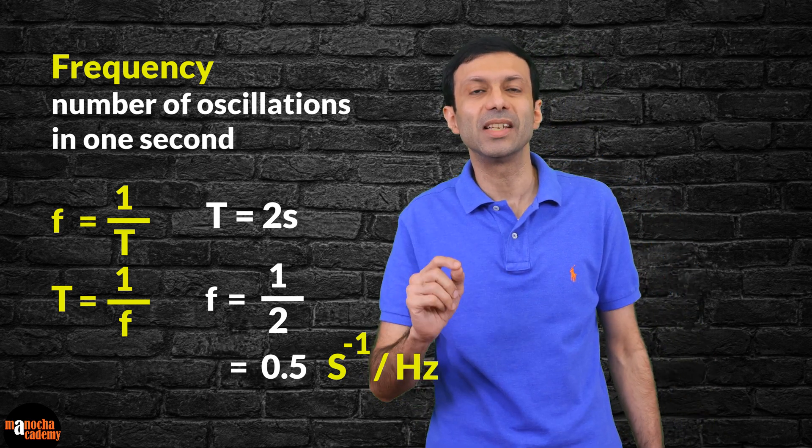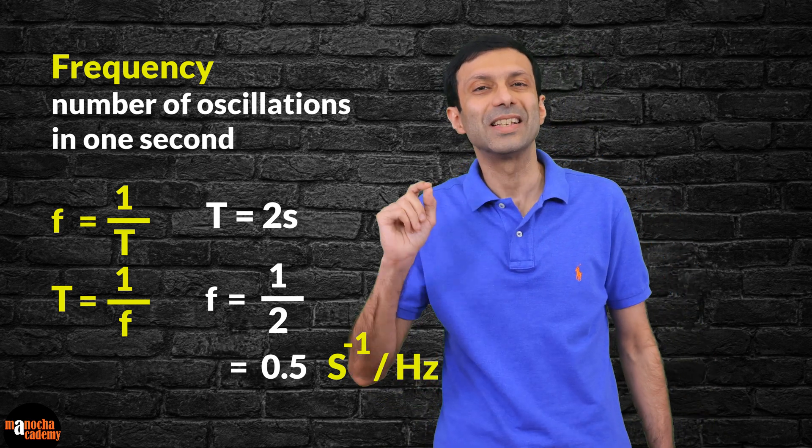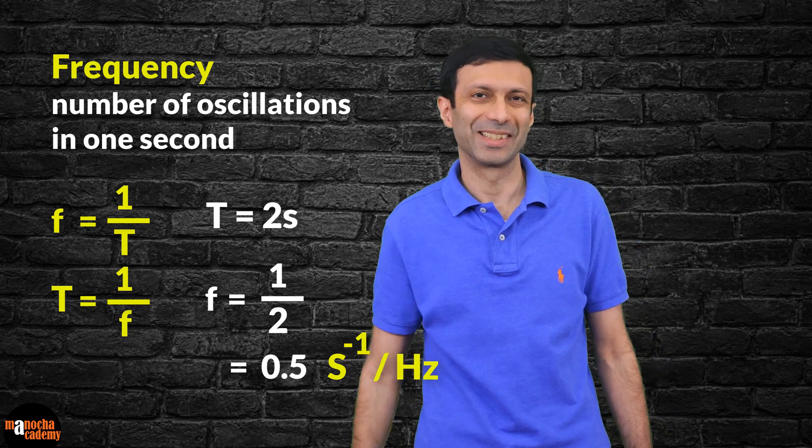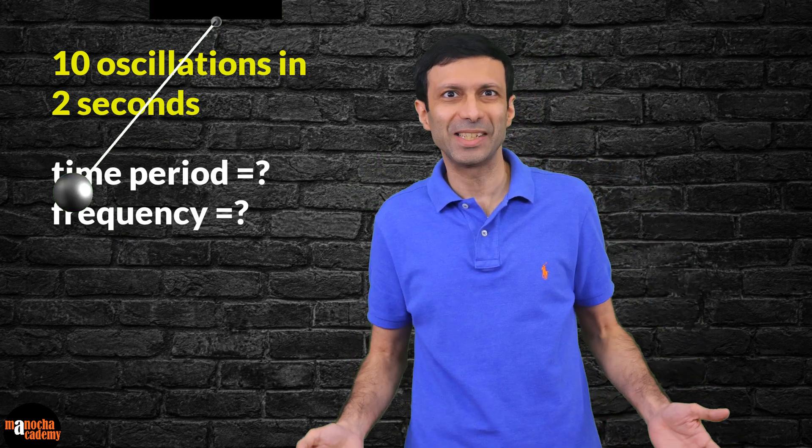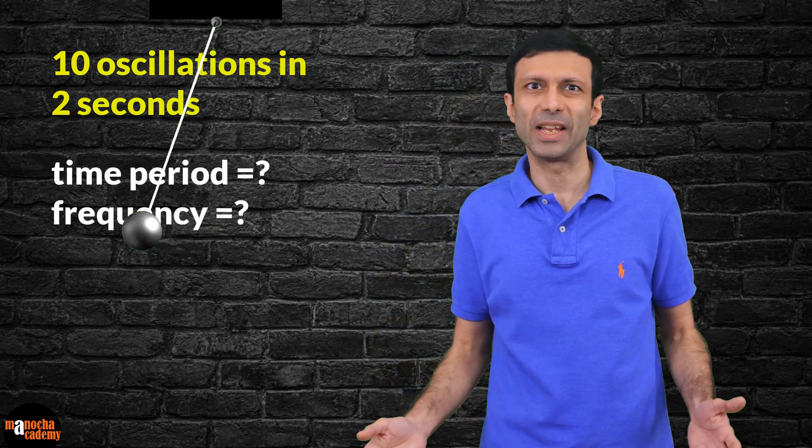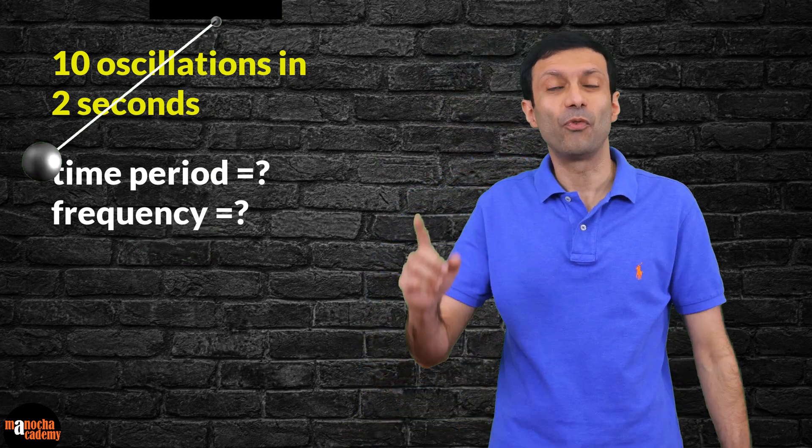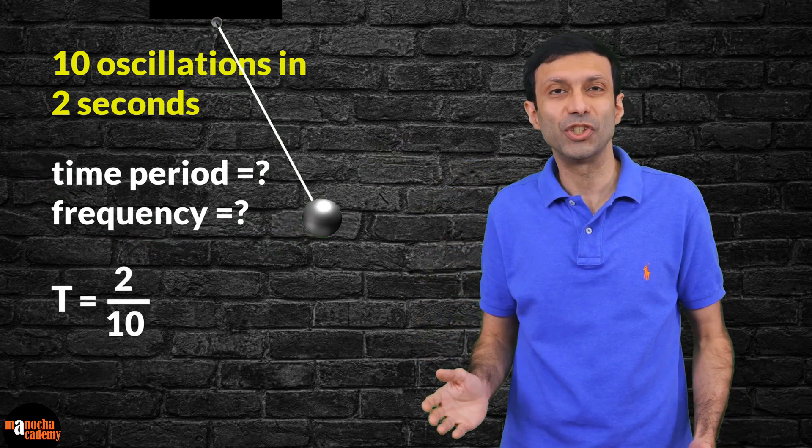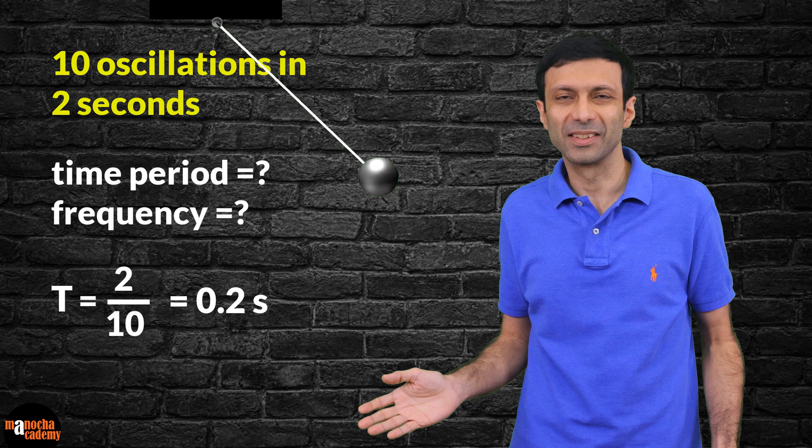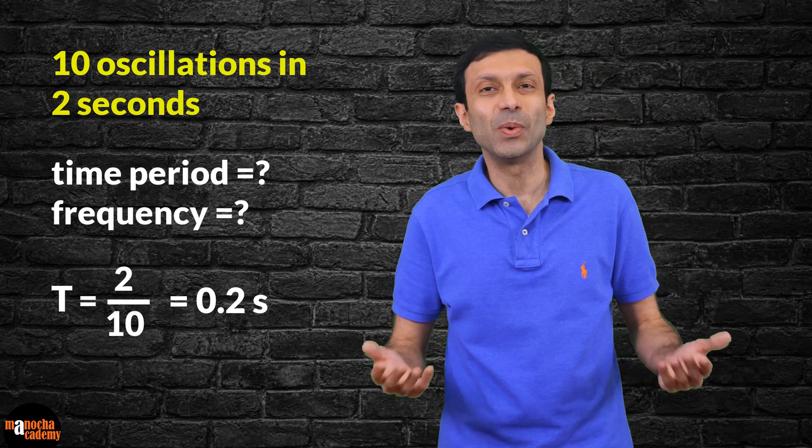Let's say a pendulum completes 10 oscillations in 2 seconds. Can you find its time period and frequency? 10 oscillations takes 2 seconds, so the time for one oscillation is 2 divided by 10, which is 0.2 seconds.